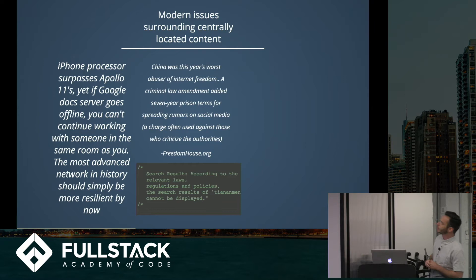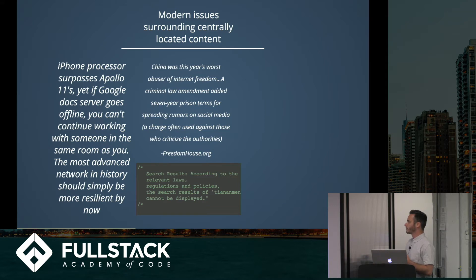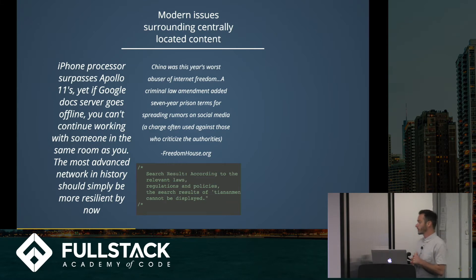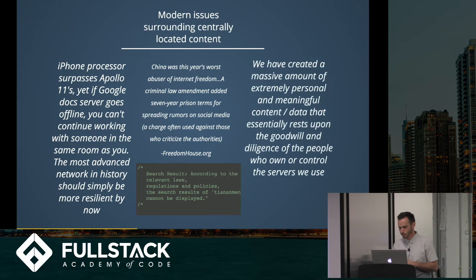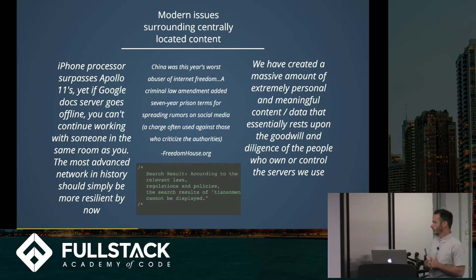On a more serious note, according to freedomhouse.org, which measures freedom of the web and communication, China was this year's worst abuser of Internet freedom. A criminal law amendment added seven-year prison terms for spreading rumors on social media, a charge often used against those who criticize authorities. We've created a massive amount of extremely personal and meaningful content and data that's essentially resting upon the goodwill and diligence of the people who own or control the servers we use.